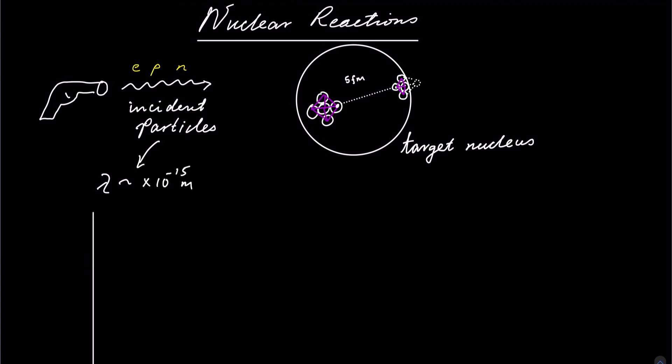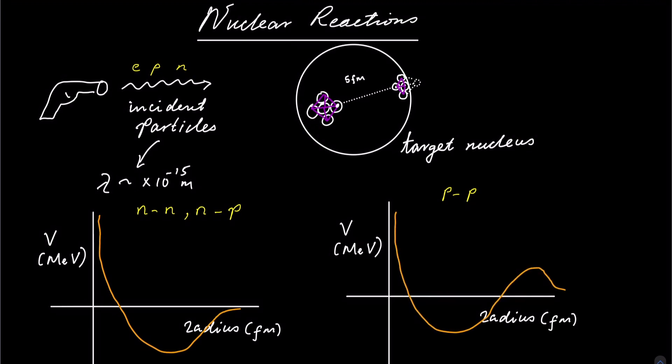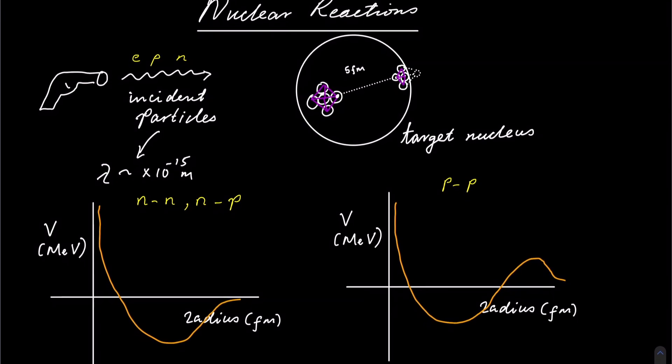Now we can plot the nuclear potential as a function of radius for neutron-neutron or neutron-proton pairs, and you get something like that. And for proton-proton pairs, you get a little hump on the right due to the Coulomb interaction of protons.